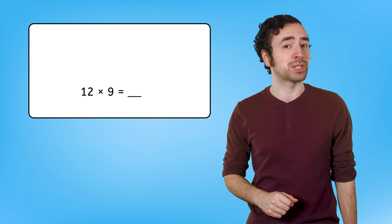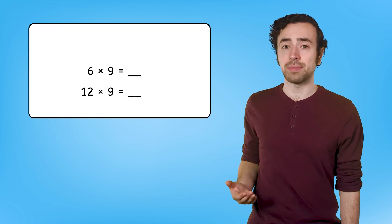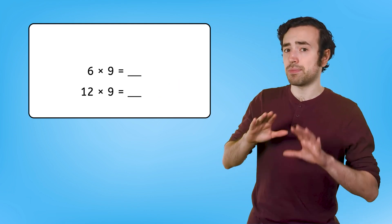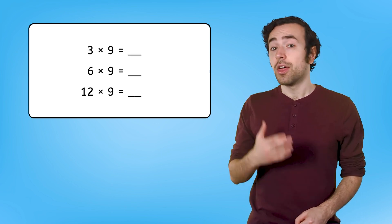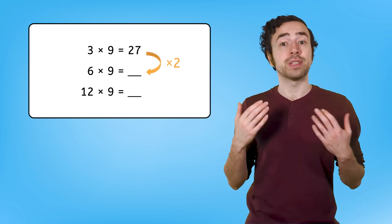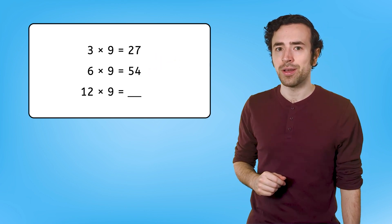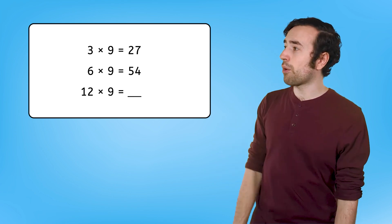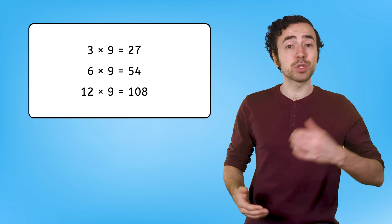Since 12 is twice as much as 6, we can use 6 times 9 to help us solve. If you know 6 times 9, then you can double that and have your answer to 12 times 9. But if you're not quite sure about 6 times 9, you could also do 3 times 9 first. 3 times 9 equals 27. We can double that to help us solve 6 times 9. 27 and 27 is 54. Then we can double that to help us with 12 times 9. 54 and 54 is 108. That means 12 times 9 equals 108.